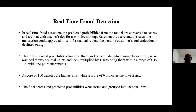For real-time fraud detection, from my years of experience in the industry, what is typically done is that after models are built, the predicted probabilities are converted to scores, and the scores are tied with a set of rules for decisioning. Based on the score and the rules, when a credit card transaction runs through the system or model, it could be approved, sent for manual review pending customer authentication, or declined outright.